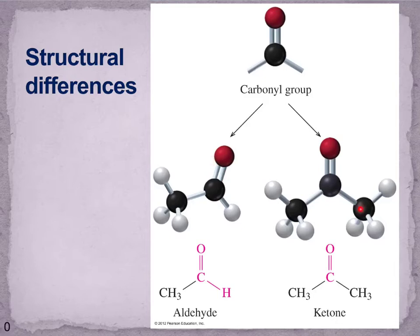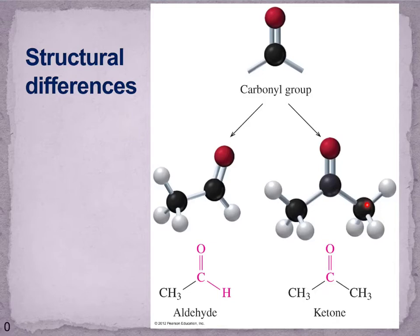For a ketone it's the opposite: we can never have the carbonyl group on either terminal carbon — it must be on a carbon somewhere in the middle. For a longer chain this can happen at various positions, but for a three-carbon chain there's really only one place, the middle carbon. If the carbonyl were on the first or third carbon, we'd have an aldehyde. So the position of the carbonyl group determines whether we have an aldehyde or a ketone.